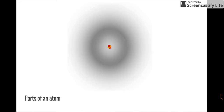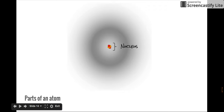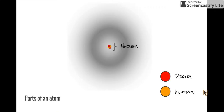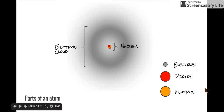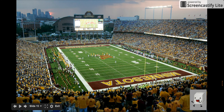Now let's talk about the parts of an atom. Atoms have two main parts: the nucleus and the electron cloud. The nucleus is made up of even smaller particles called protons and neutrons — it is the very dense center of the atom. Floating outside the nucleus is the electron cloud, which is made up of electrons. So the three subatomic particles are protons, neutrons, and electrons.